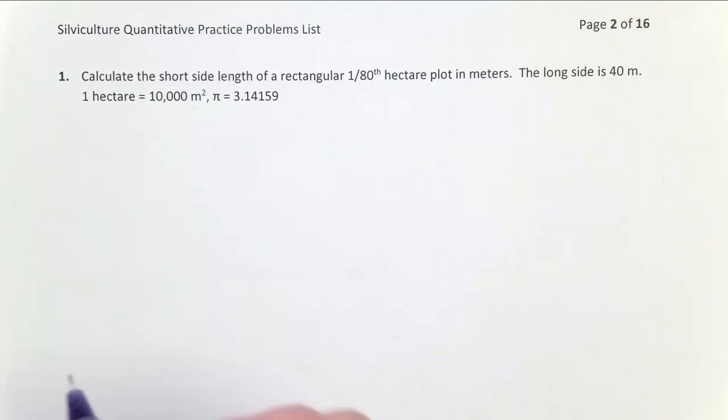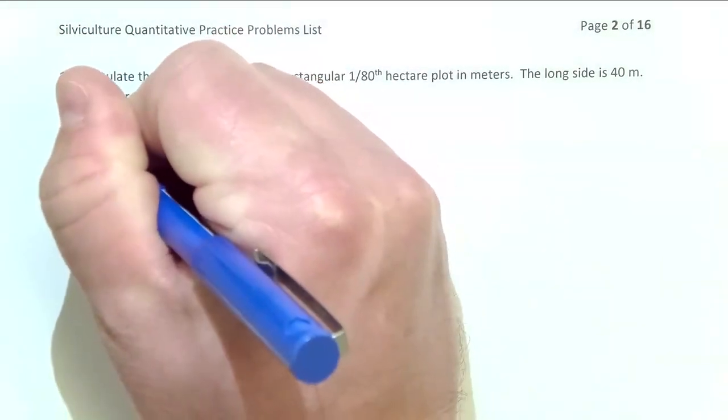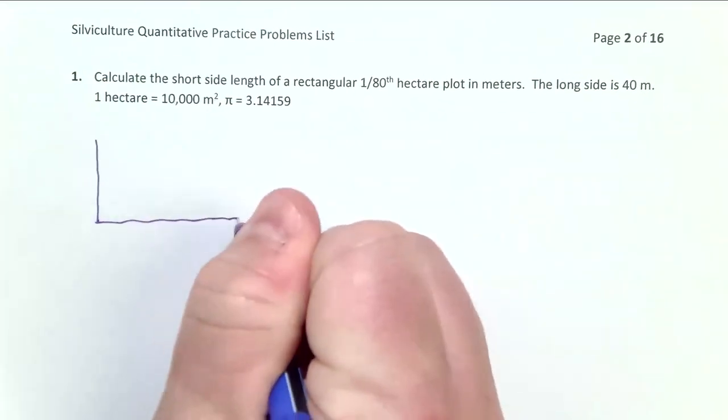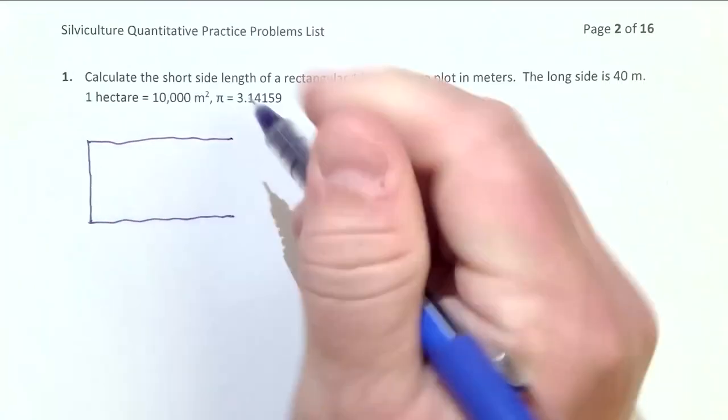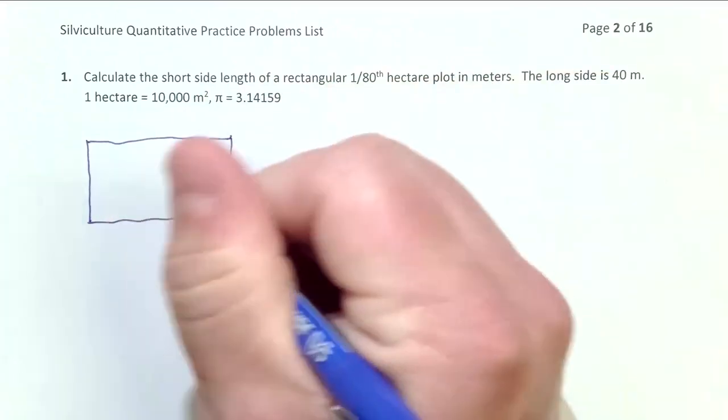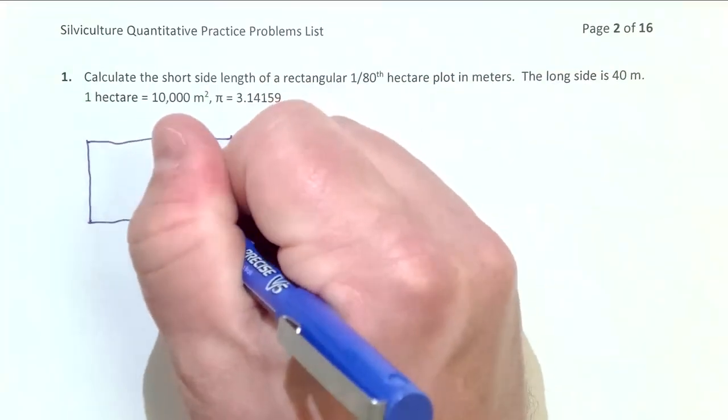So as we look at it, let's start with the basic setup. I'm going to draw a rectangle here. And what we know is it's an 80th of a hectare plot, so we know the area.